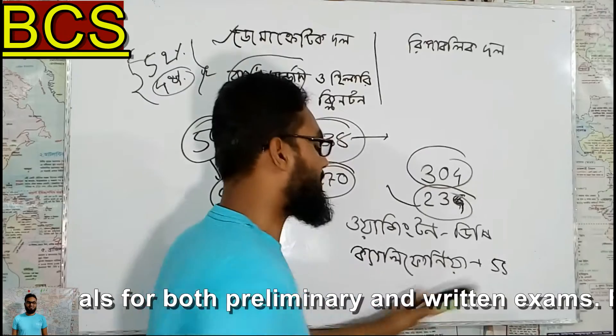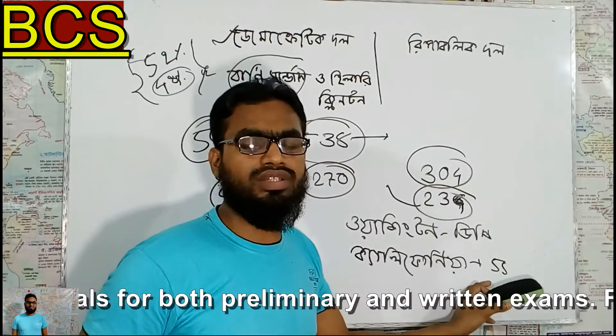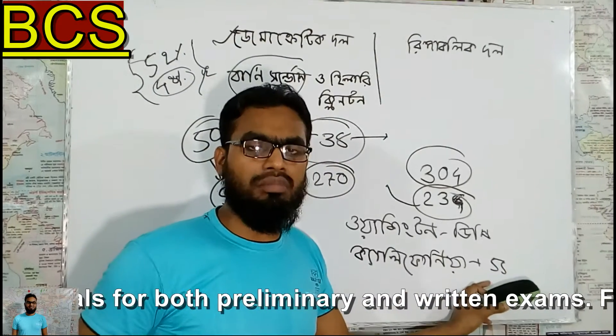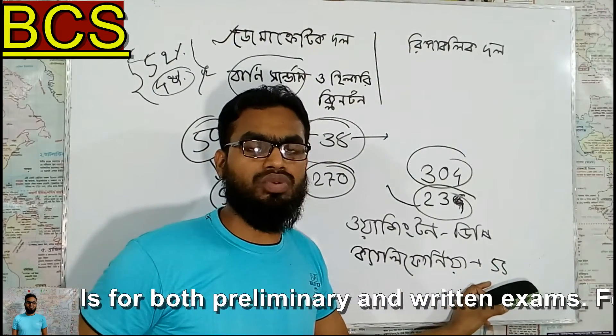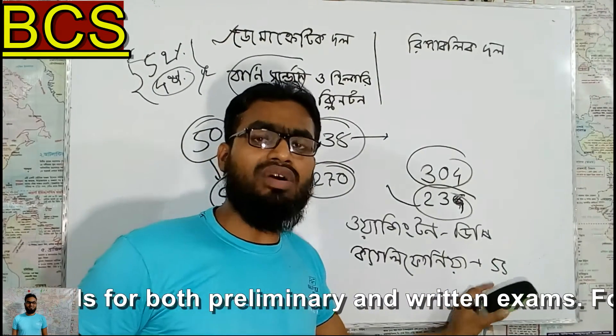This is the first example: 5-5 Electoral College votes. This illustrates how the Electoral College distribution works across states.